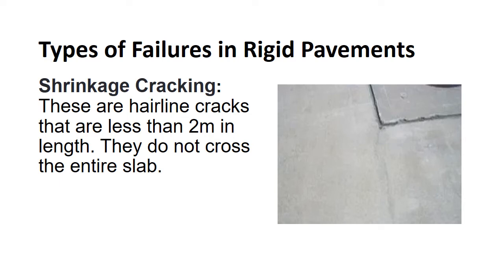Shrinkage cracks can be treated by crack sealing if they are of moderate size; synthetic resin is generally used as the crack sealant. Entire slab replacement is used in severe situations.